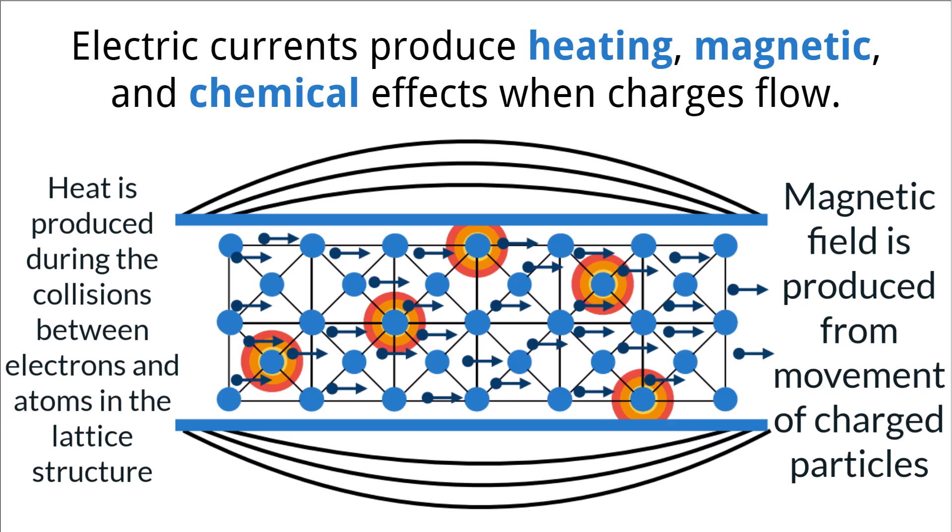Charged particles like electrons not only produce an electric field, but also a magnetic field. Therefore, when electrons move through a material, that material gains a magnetic field from the net movement of the electrons. All wireless charging uses this effect of magnetic fields produced by currents to cause charging in devices.